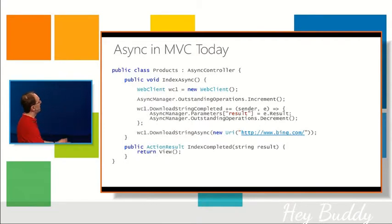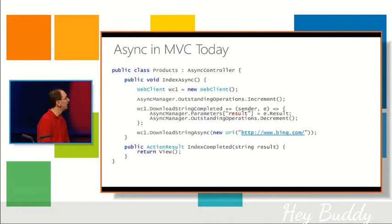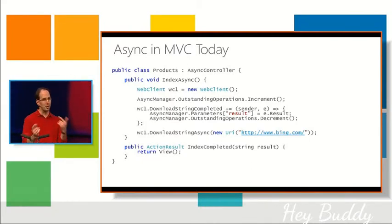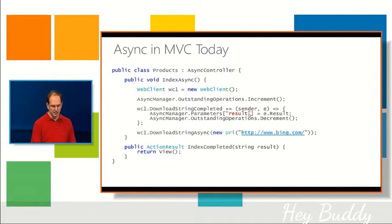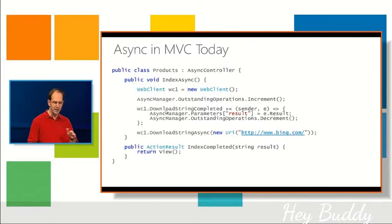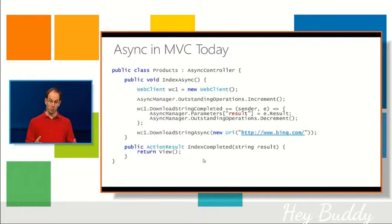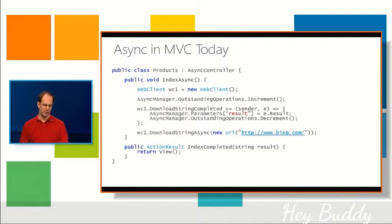Here's what you do today with MVC in order to enable async — we've supported it since ASP.NET MVC 2. It's a little bit messy code: you have to explicitly wire up callbacks, increment and decrement when doing operations, manage the parameters you pass, and use a begin and end method. This works today if you want to build really scalable solutions, but it's kind of messy.